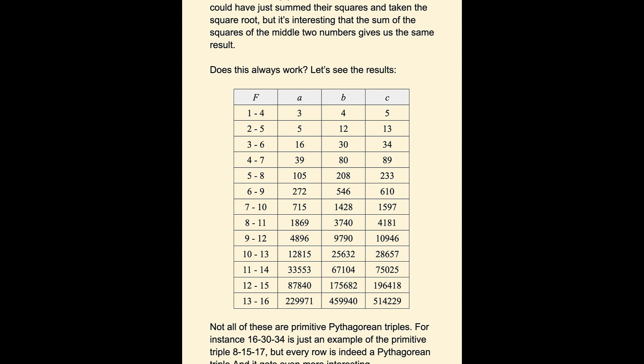16, 30, 34 is clearly not a primitive triple. They're all even. But some of these are primitive, and some are not.